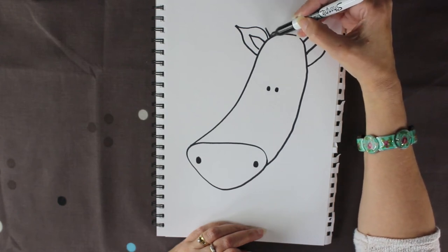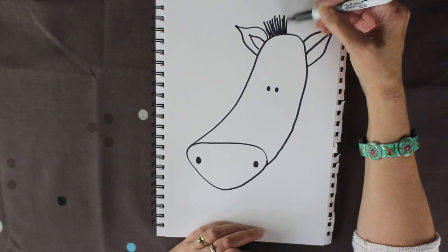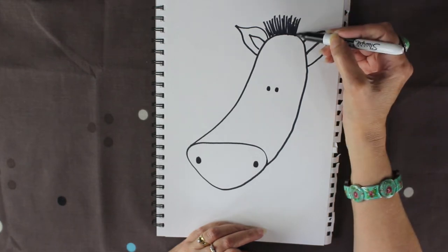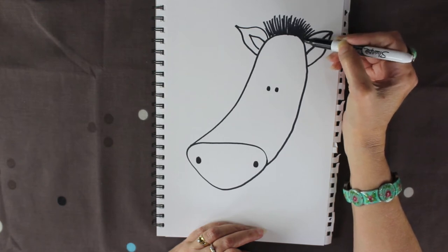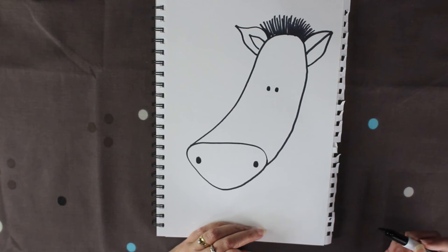We're going to give him lots of hair. This is very important for a zebra. So starting from the line just bring all of your hair from ear to ear. I've got a little bit of space I can put another one in there.